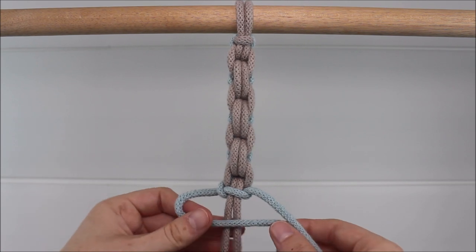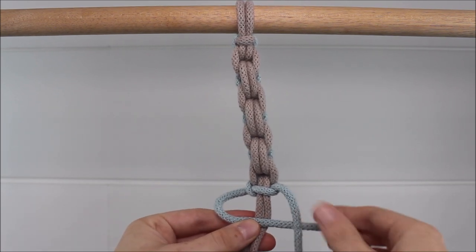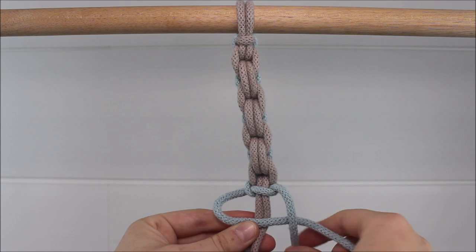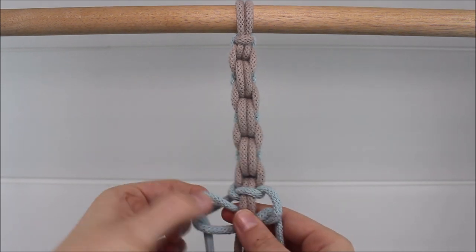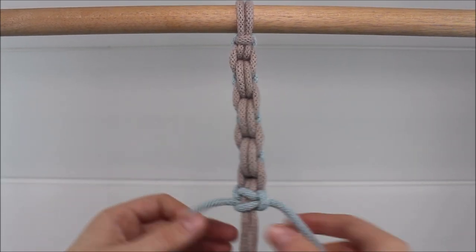Then the cord on the left crosses over the two cords in the middle to form my loop. The side on the right goes over the left, behind the two in the middle, and up through the loop. And I pull it tight.